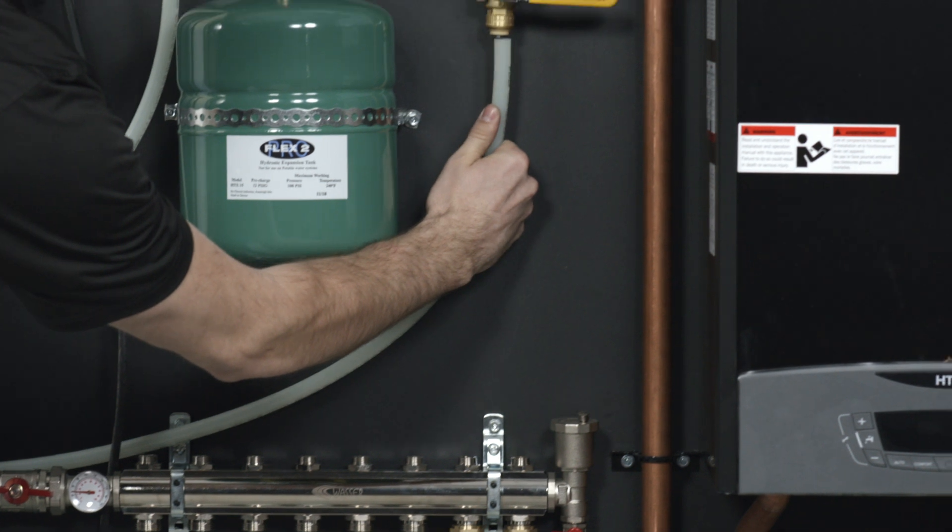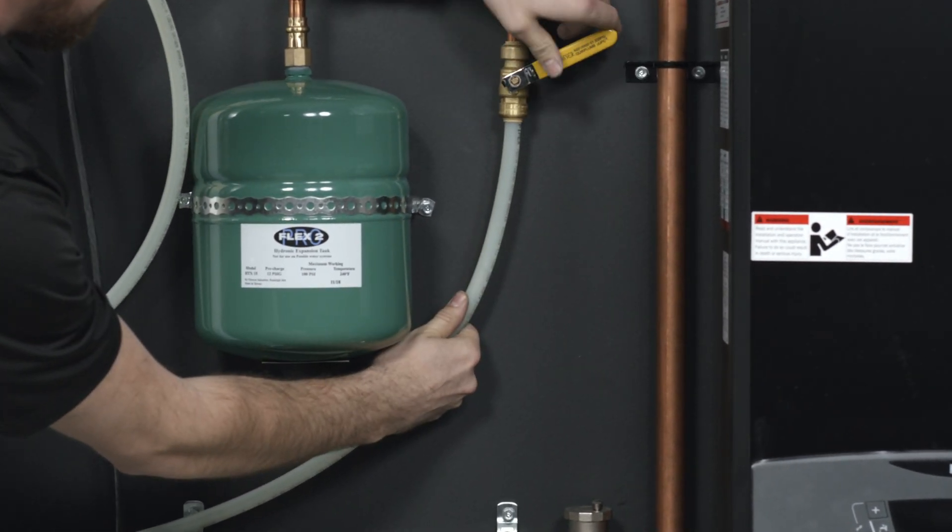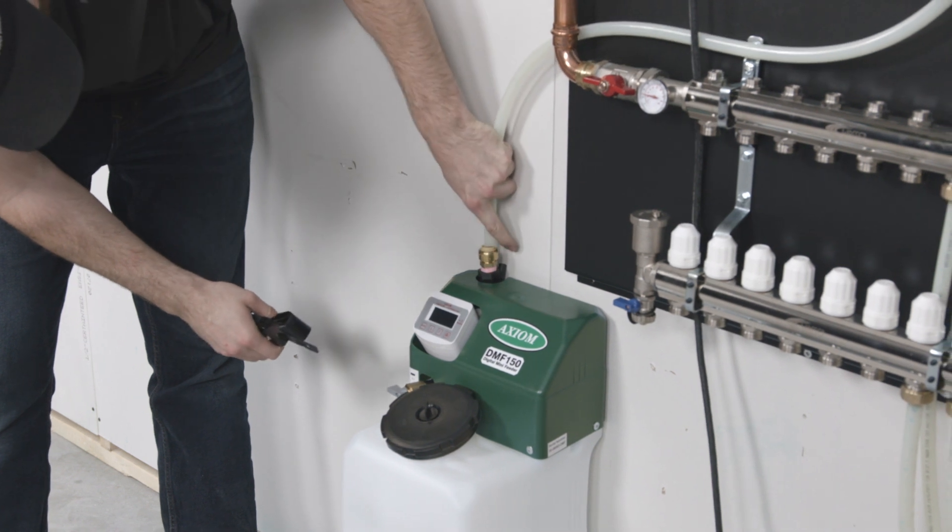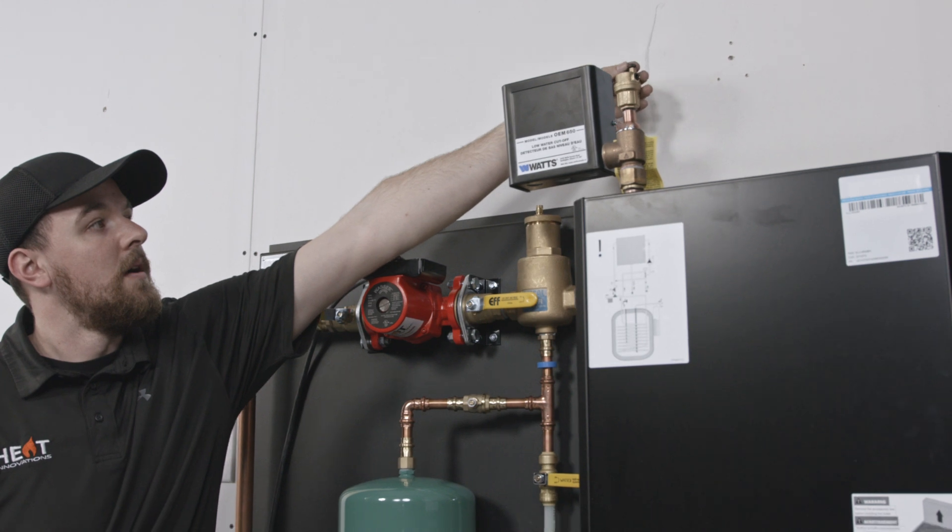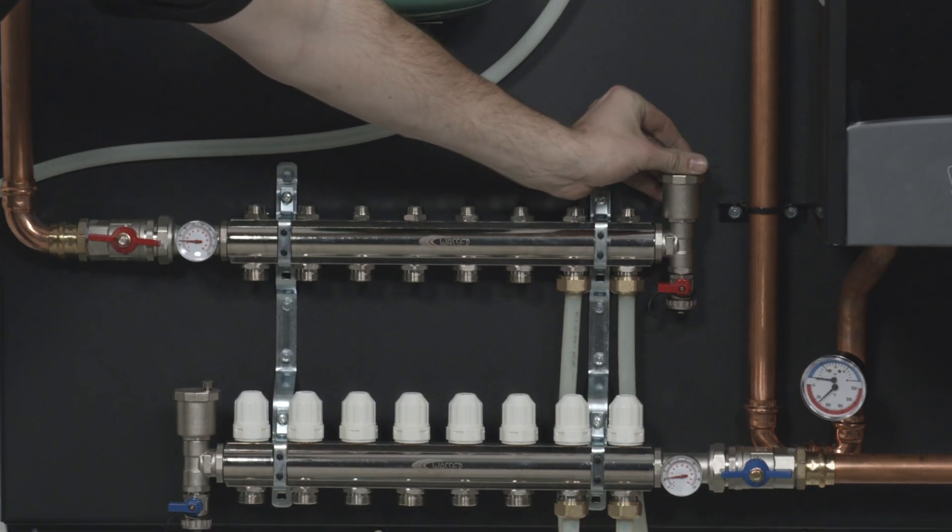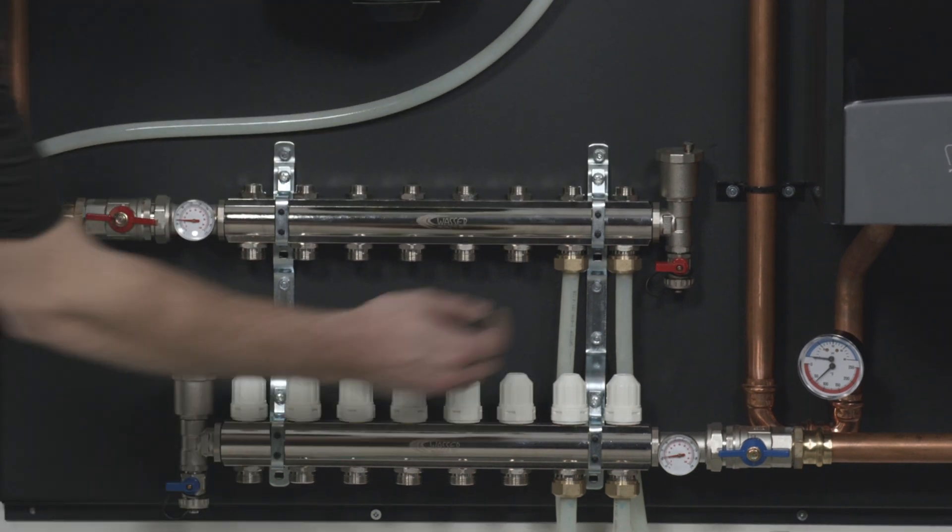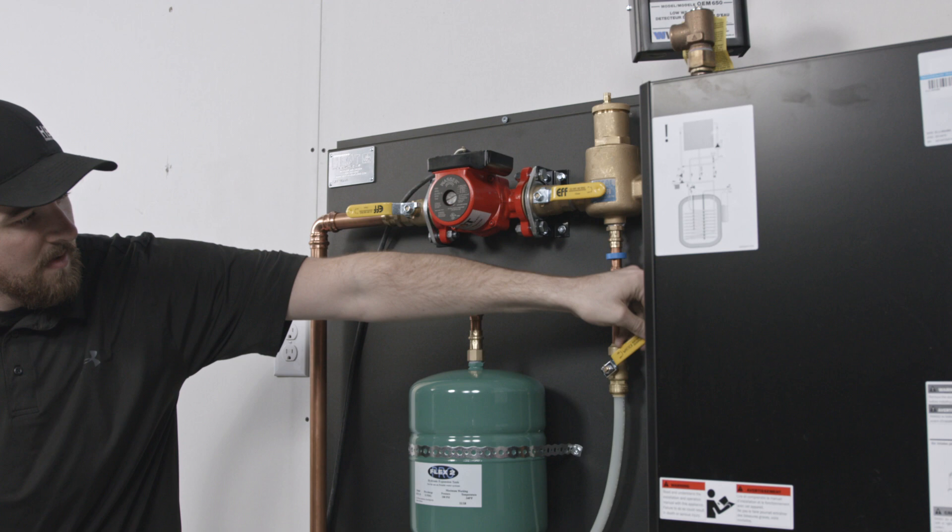Using half-inch PEX pipe or copper, connect the feeding system to the fill port between the air eliminator and expansion tank. Check to make sure all air bleeders are in the open position. Also make sure all ball valves are open to allow the system to fill.